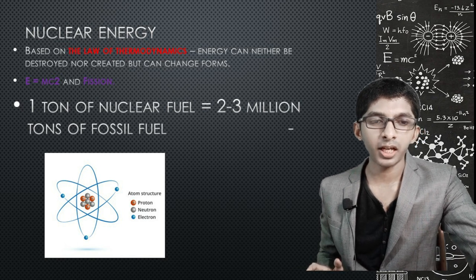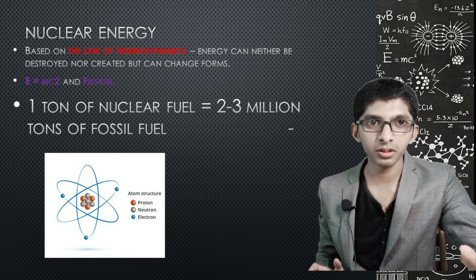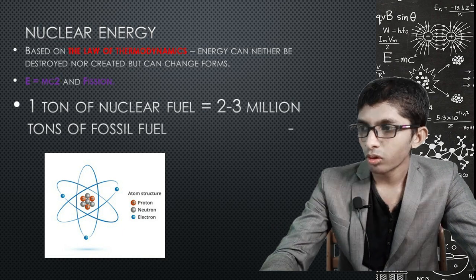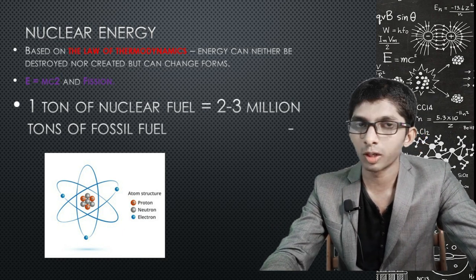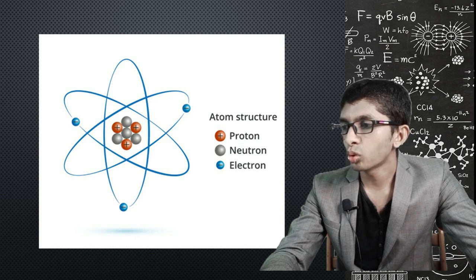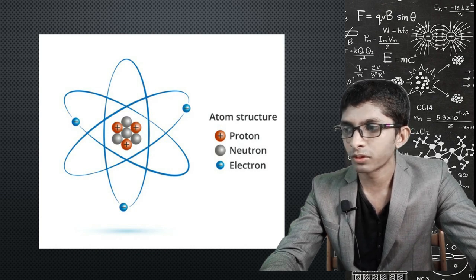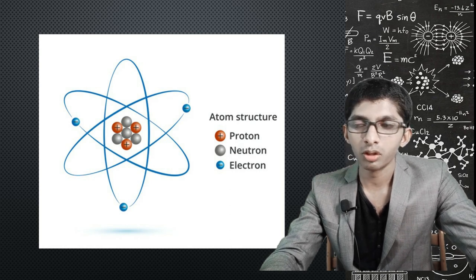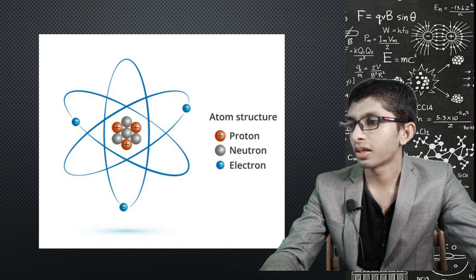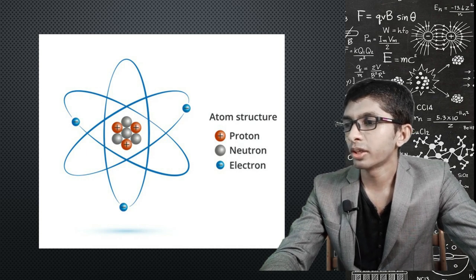All matter is made of atoms. This atom has a nucleus with electrons orbiting around it. If we split this atom, the atom will split into smaller parts.